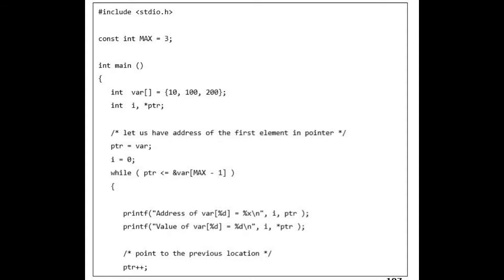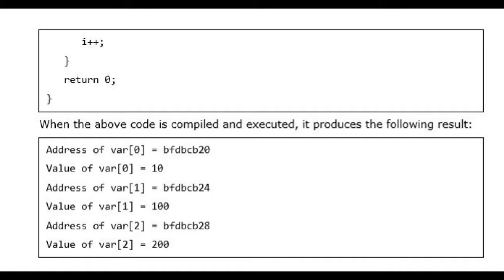while (ptr <= &var[MAX - 1]) { printf("Address of var[%d] = %x\n", i, ptr); printf("Value of var[%d] = %d\n", i, *ptr); /* point to the previous location */ ptr++;